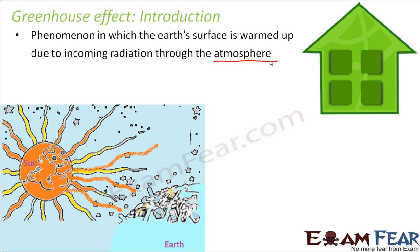There exists a balance between the incoming radiation and outgoing radiation from the earth. Whatever radiation is coming in and whatever radiation is going out determines how much the temperature within the earth will be.